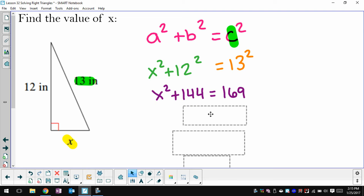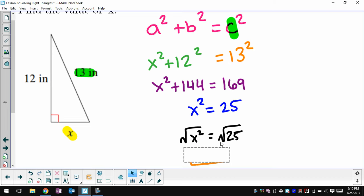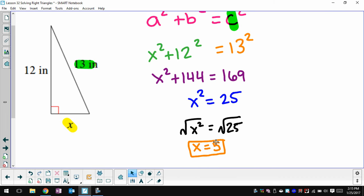So now I square the numbers. I'm starting to solve for x. To get rid of the squared on x, I square root both sides of this equation, and I can find that my third side is 5.